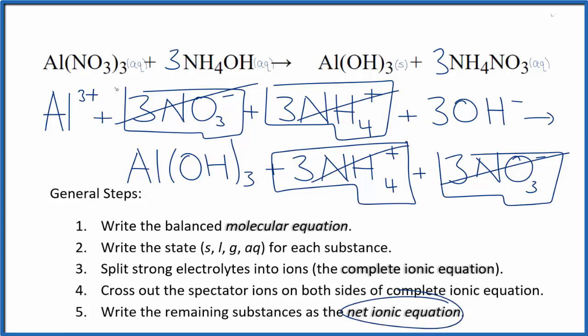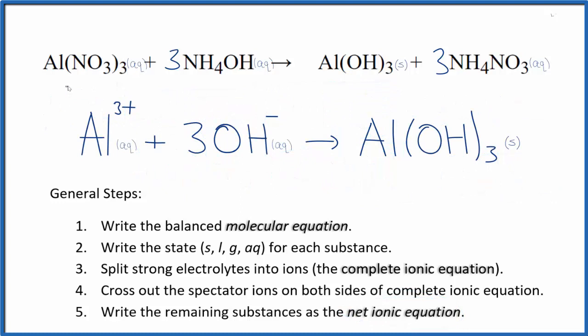What's left, that's the net ionic equation for aluminum nitrate plus ammonium hydroxide. I'll clean this up and write the states. We'll have our net ionic equation. So this is the balanced net ionic equation.